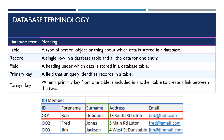There are a number of key pieces of terminology to become familiar with as you study databases. A table is a type of person, object or thing about which data is stored in a database. A record is a single row in a database table and therefore all the data for one entry in that table. A field is a heading or a column under which data is stored in a database table.